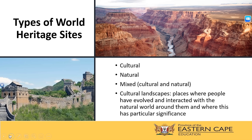If I could just draw your attention to the images on your screen — the top image on the right-hand side is that of the Grand Canyon, which is a natural heritage site. The bottom left is the Great Wall of China, which is a cultural heritage site. I would also just like to remind you about the tourism icons that you studied in Term 2 — both these World Heritage Sites were also part of the world icons, so you should recognize those images immediately.